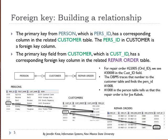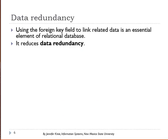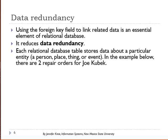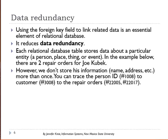We can then go to the persons table and take that 1008 and see that this is a repair order for a customer whose name is Joseph Kubek. Using the foreign key field to link related data is an essential element of relational databases. It reduces data redundancy. In each relational database table, we have data stored for a particular entity, and that data is stored once. We have to get it right, and we can update it, and it will be high data quality that can be referenced by other tables and other applications because we have it stored once in one location.